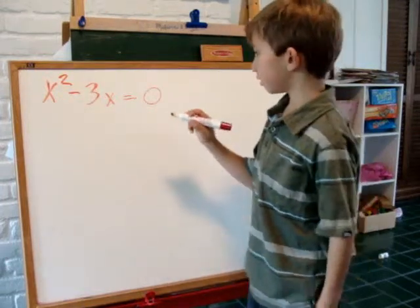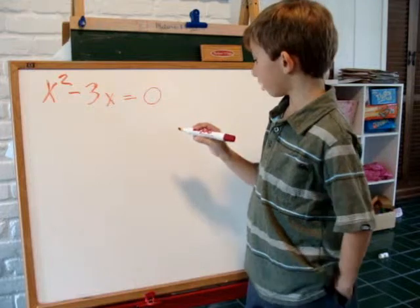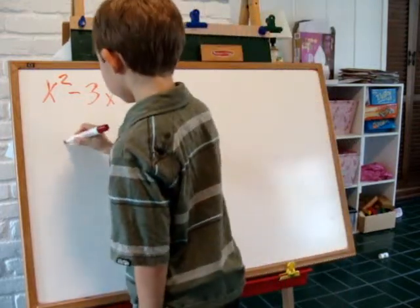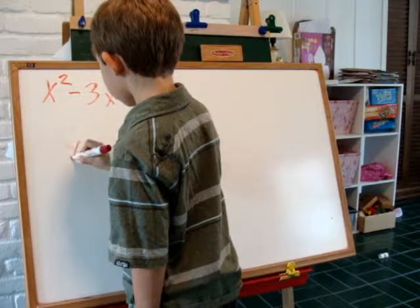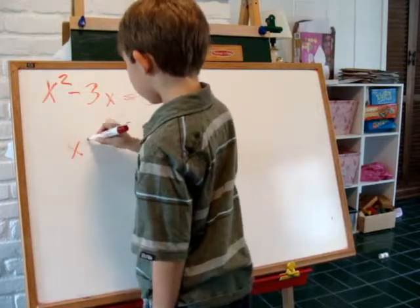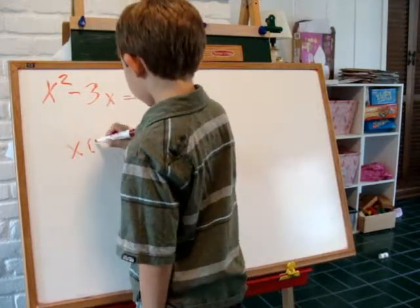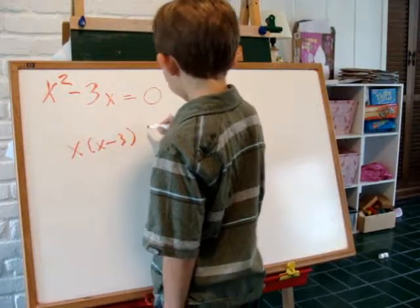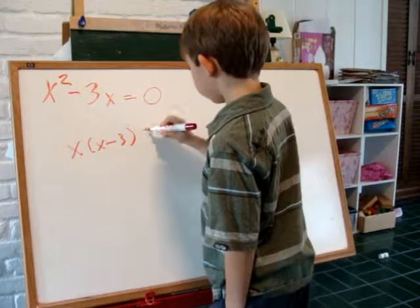Notice that there are x's in both terms so we can factor it out. Now we get x times x minus 3 equals 0.